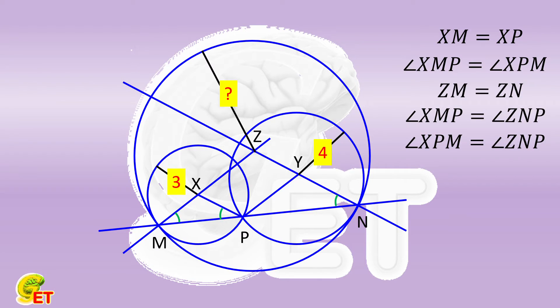In the same way, we get that angle YPN is equal to angle ZMP, so YP is parallel to ZM. Both pairs of opposite sides of the quadrilateral XPYZ are parallel, so it is a parallelogram.